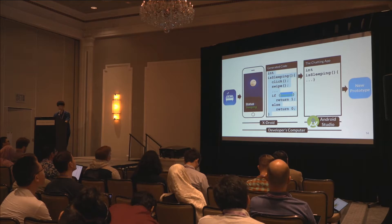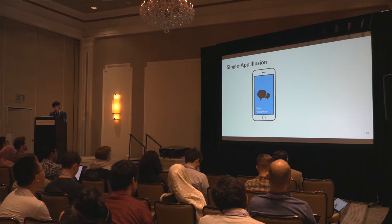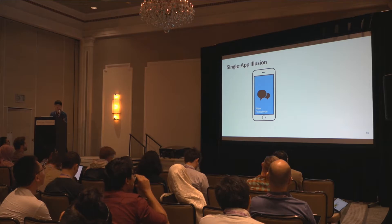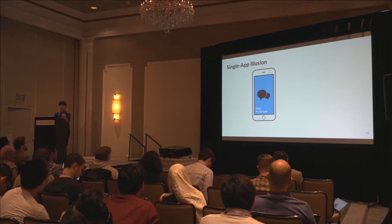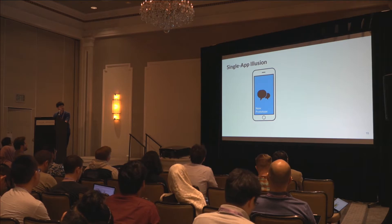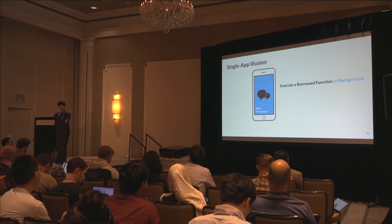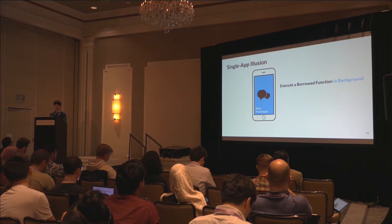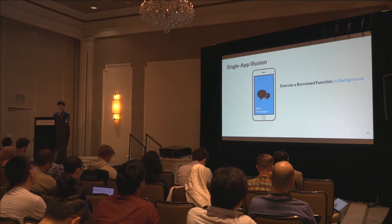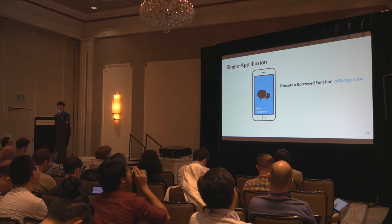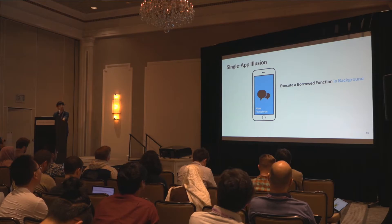Now that the prototype is done, let's talk about how to execute it. Since you borrow the function through the user interface, and the UI is supposed to be shown in the foreground, every time the borrowed function is executed and the Sleep Tracker app comes to the foreground, it will disrupt the user experience. So it is desirable to run it in the background. The easiest way to achieve this is by modifying the operating system, which has full control of the Android UI. However, if the prototype can only run on a specially modified OS, it might not be testable on the latest operating systems or those customized by hardware vendors. So it is desirable to run without OS modification.